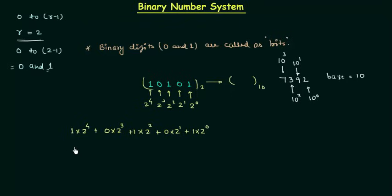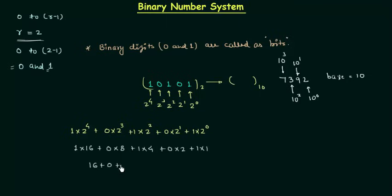2 raised to power 4 is 16, so 1×16 = 16. 0×8 = 0. 1×4 = 4. 0×2 = 0. And 1×1 = 1. Adding these together: 16 + 0 + 4 + 0 + 1 = 21. So the decimal equivalent of the binary number 10101 is 21. Now you have a clear idea about the weights of positions in binary numbers.